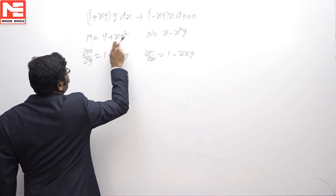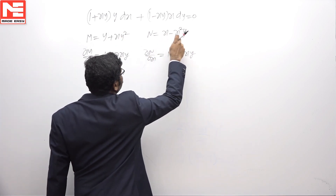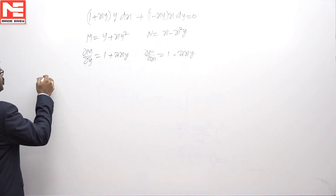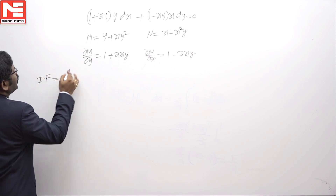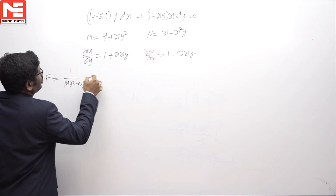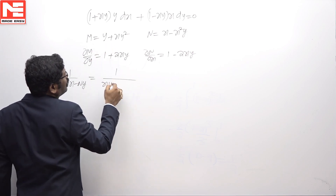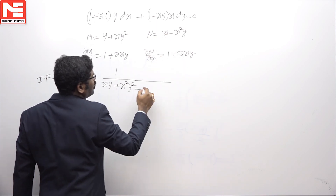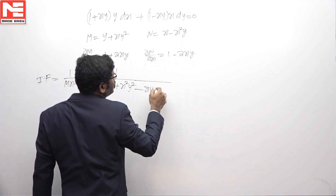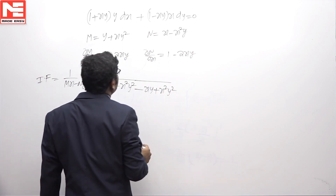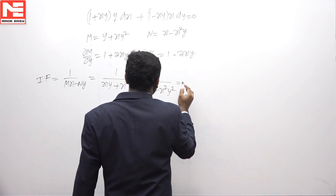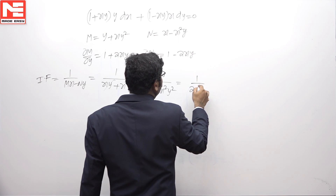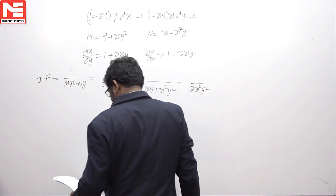Every term of M is involving y, every term of N is involving x, and both are not homogeneous. Therefore, the integrating factor is 1 by (Mx - Ny): 1 by (xy + x²y² - ny), giving xy + x²y². After cancellation, we get 1 by 2x²y² as the integrating factor.